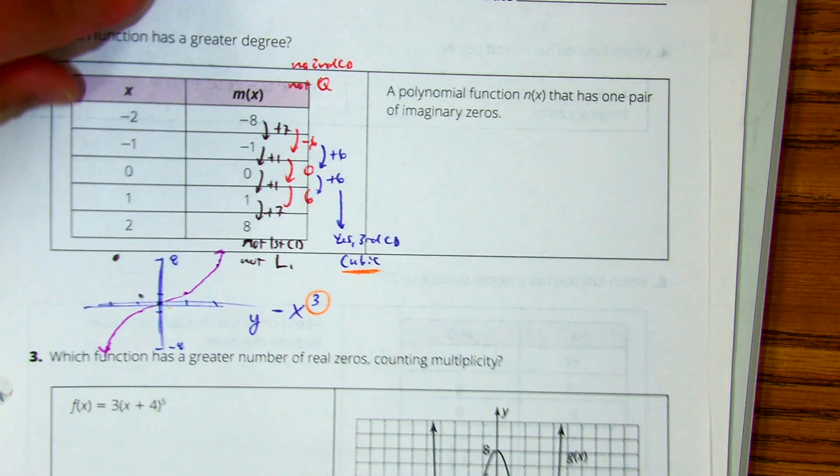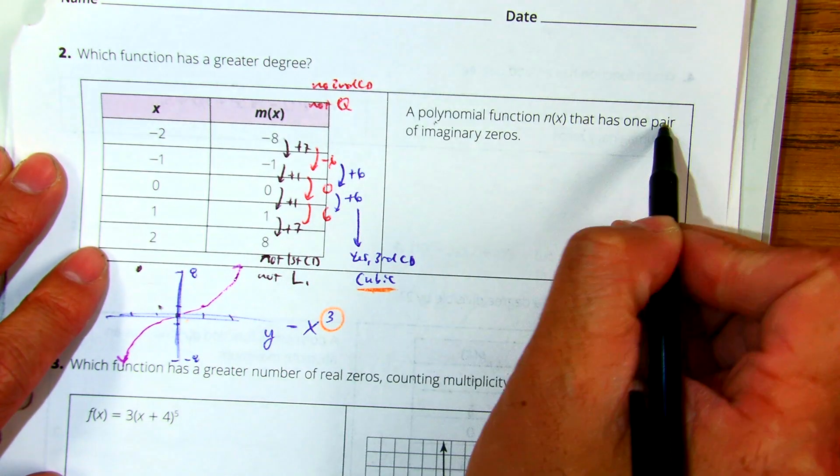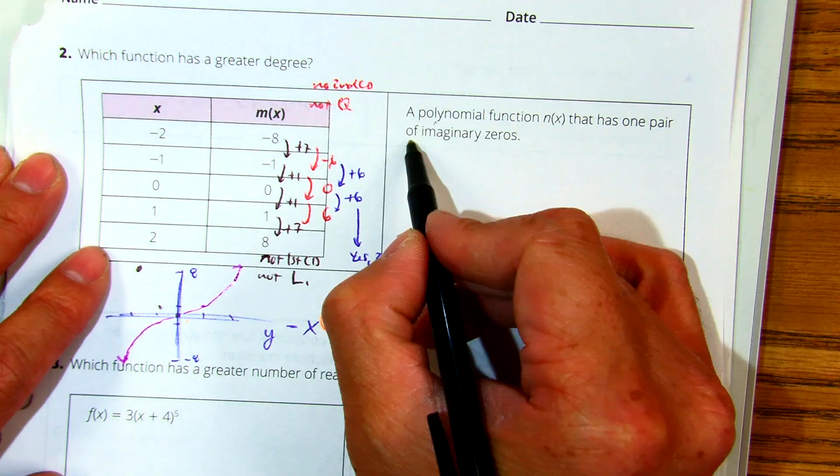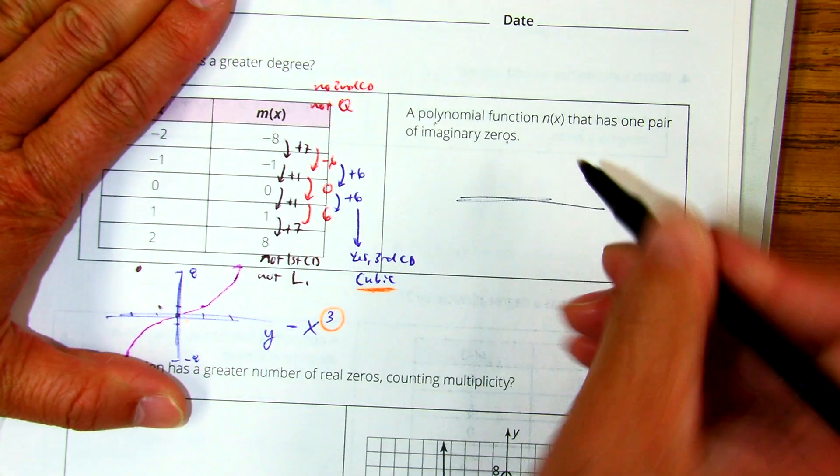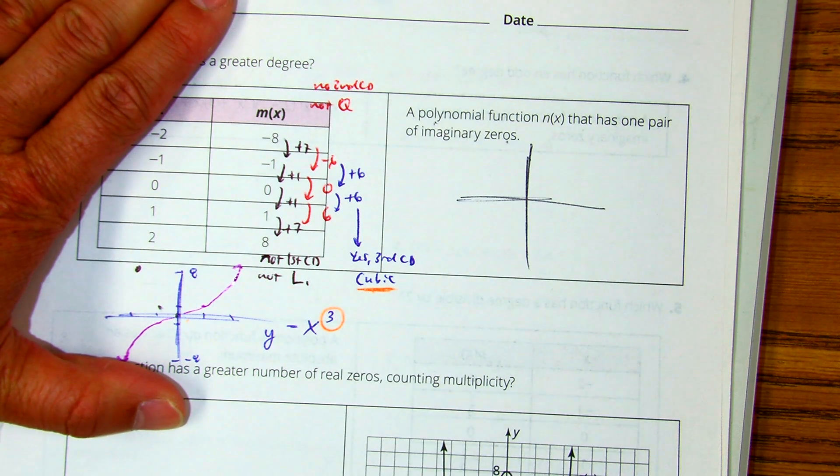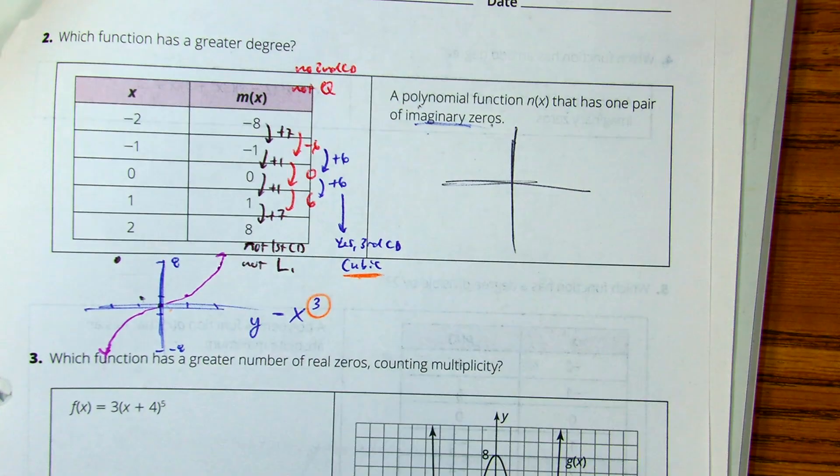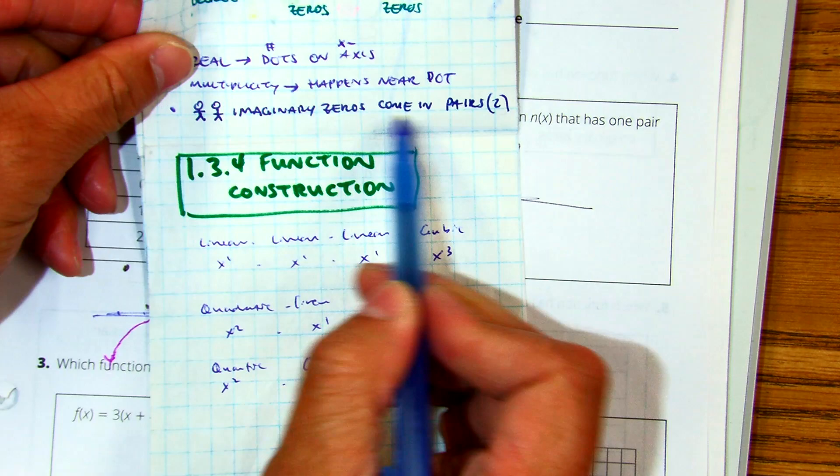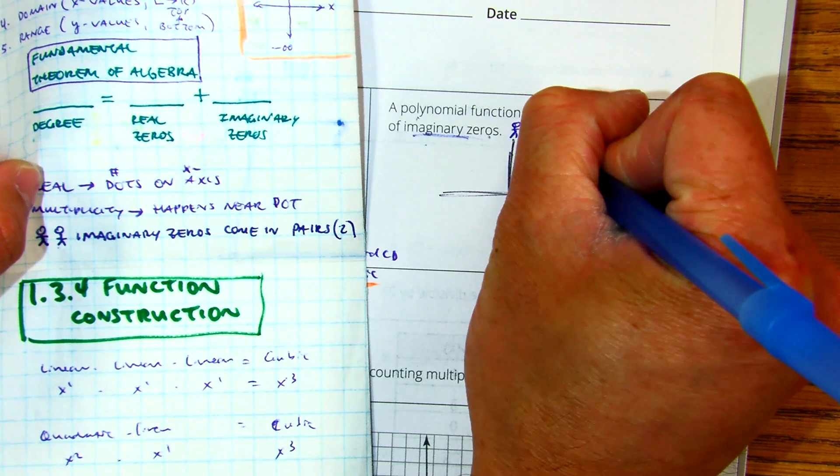Alright, let's look at the right side. A polynomial function n of x that has one pair, that's all they told us, one pair of imaginary zeros. Now, if I draw n of x and imaginary zeros come in what? Pairs. Imaginary zeros come in pairs.